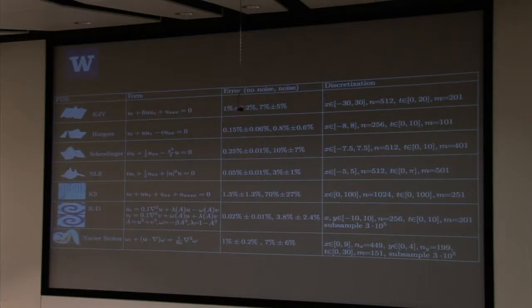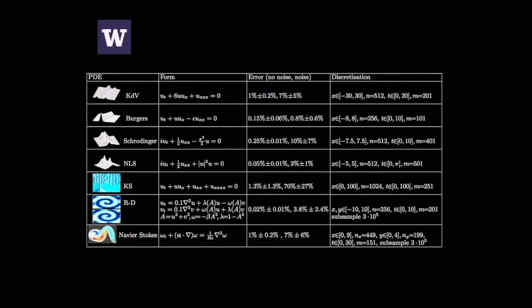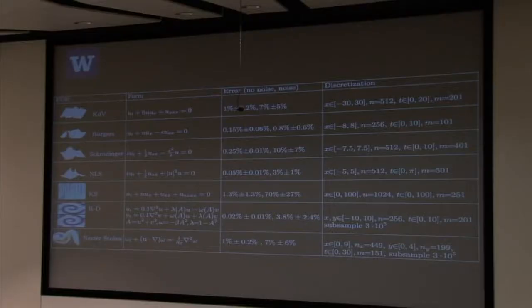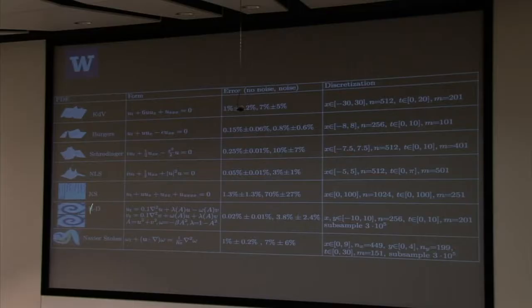So that is one PDE. And then we started playing around with, here's sort of my, this kind of represents my graduate education right here in this slide. This is kind of the things I learned in graduate school from my particular graduate school, which is things like KDV, Burgers, Schrodinger, NLS, Kuramoto-Sivashinsky, reaction diffusion systems, Navier Stokes, and we can get them all. And we tell you how we discretized, we tell you how much noise you can handle, and in some cases you can handle very little noise, and in some cases you can handle more. The one that I think is interesting is this reaction diffusion system. We're really intolerant to noise. And I actually have a conjecture of why that's true.